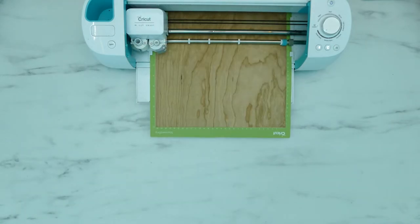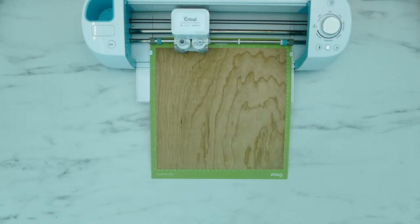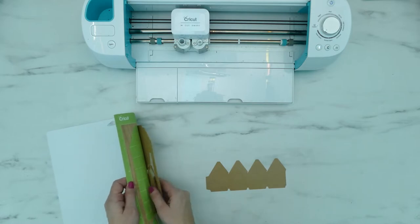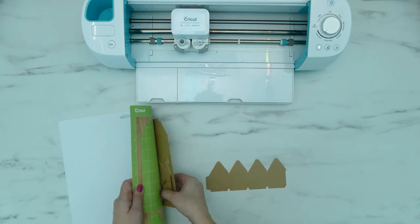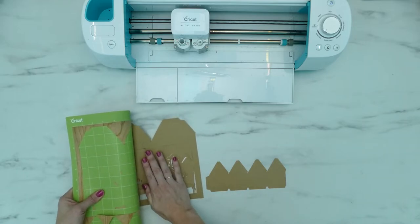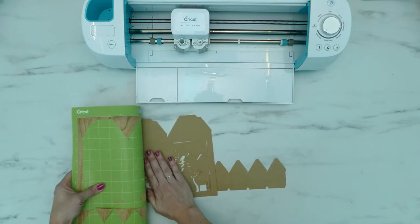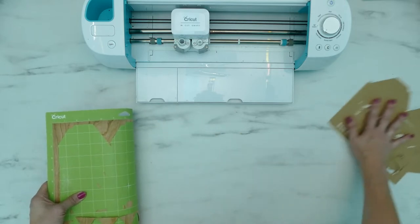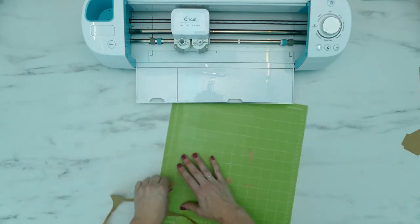When everything has been cut, you can press the up and down arrow button again to remove your mat. To remove the design, you'll want to slightly bend your cutting mat and carefully pull off the cardstock pieces. You can use a scraper to remove all the tiny pieces left behind on the mat. Then place on your second sheet of cardstock and repeat the steps until that has been cut.